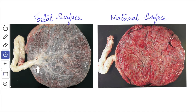The peripheral margin is the outer margin. It is continuous with the fetal membrane which consists, from outside inwards, of fused decidua parietalis and capsularis, then the chorion laeve and amnion.